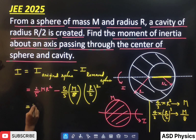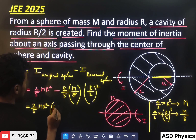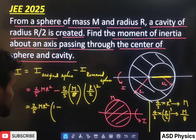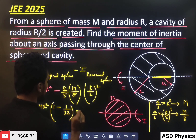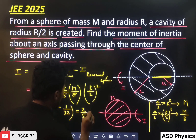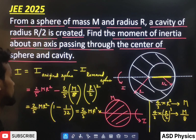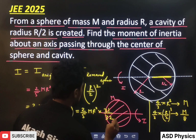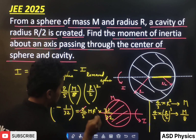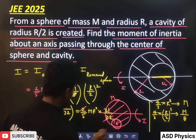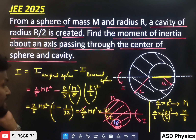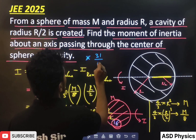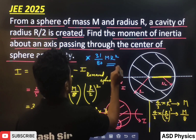Now we simplify. Taking 2/5 MR² as common, we get 1 minus 1/32 inside the bracket — since 8 times 4 gives 32. That gives 2/5 MR² times 31/32. Simplifying further: the 2 and 32 give 16, and 16 times 5 gives 80. So the final answer is 31/80 MR².